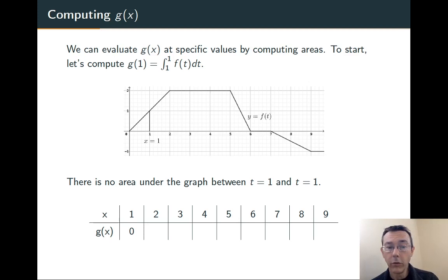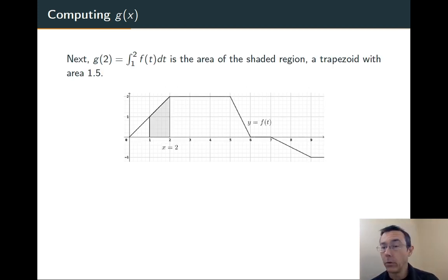Let's move on to g(2). So the integral from 1 to 2, f(t) dt, is this shaded region. It's a trapezoid, and you can compute that using the formula one half times b1 plus b2 times h. Or you can see that you have a 1 by 1 square and a 1 by 1 isosceles right triangle. So you get 1.5.